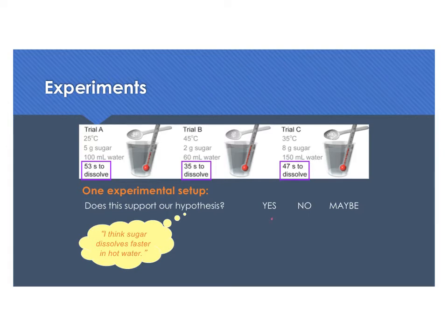Some people initially might say yes, because hottest was 45 and that only took 35 seconds. Next was 35 and that took 47 seconds. And next was 25 and that took 53 seconds. So yes, sugar dissolves faster in hotter water. However, if you're looking at this closely, you might see there is a problem. That problem is that not only did we change the temperature, but we also changed the amount of sugar and the amount of water. So can we say for sure that it is the temperature that's causing the sugar to dissolve faster? No, we can't. This does not support our hypothesis, or maybe it does, but we don't have the right evidence to support that.